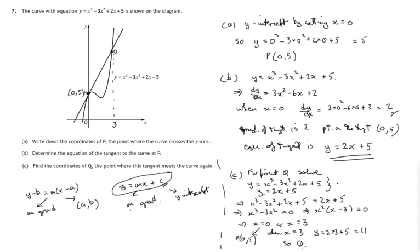So the point q is the point 3, 11. And that's the point where that tangent meets the curve again.